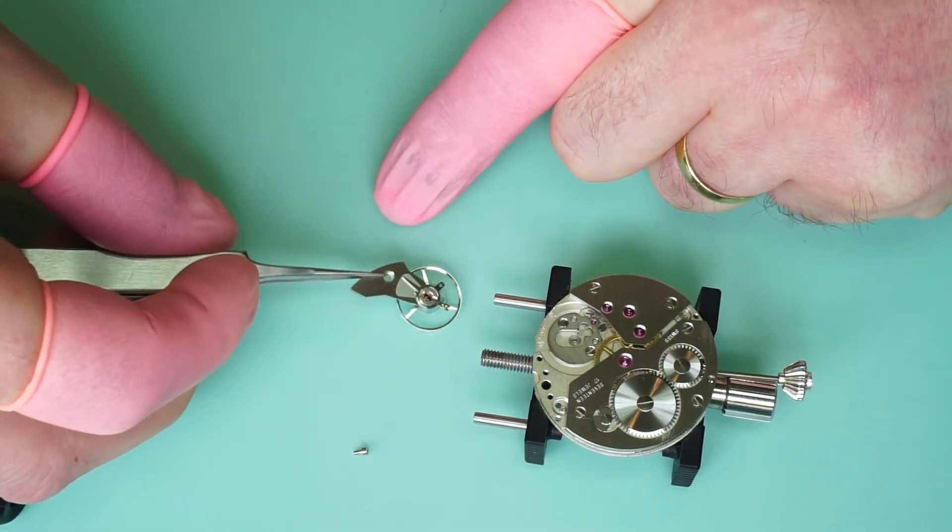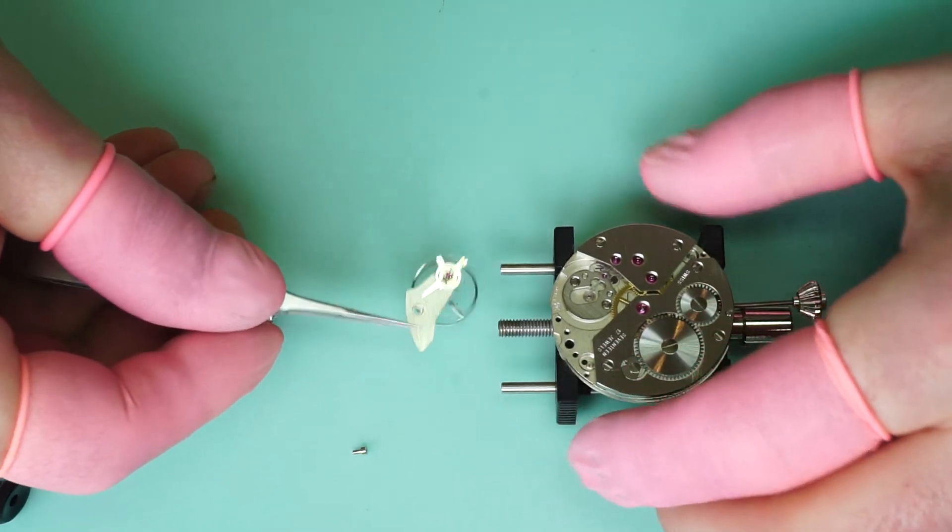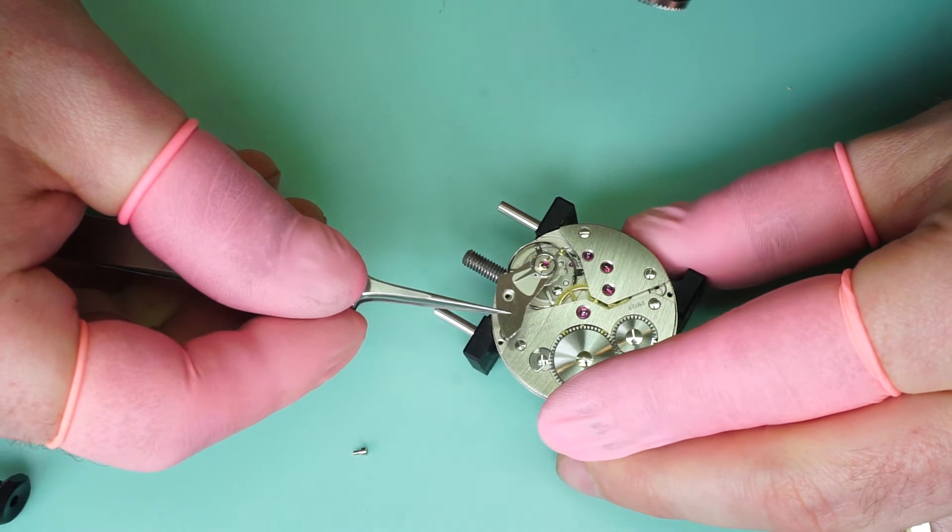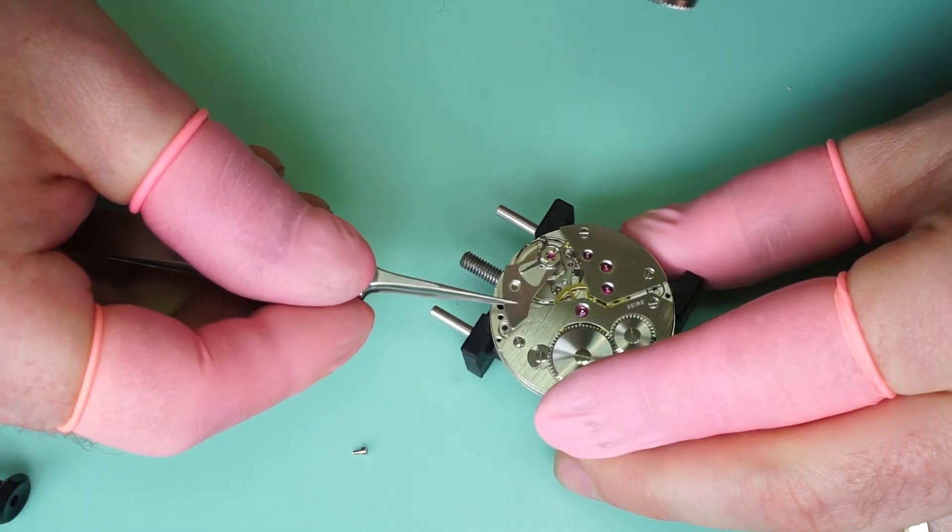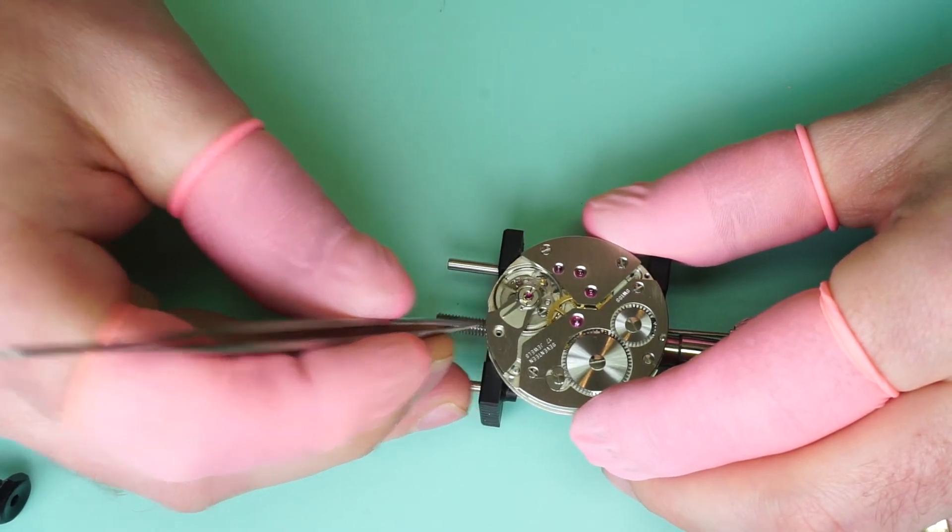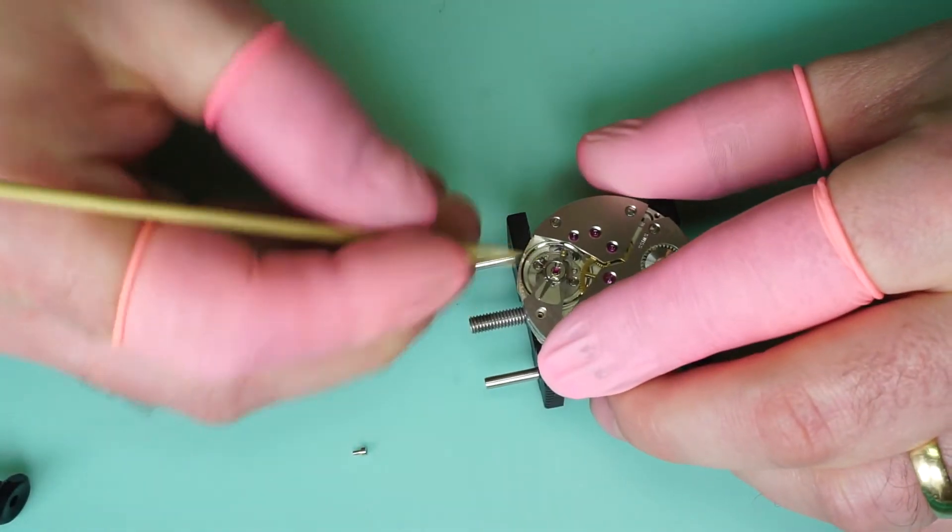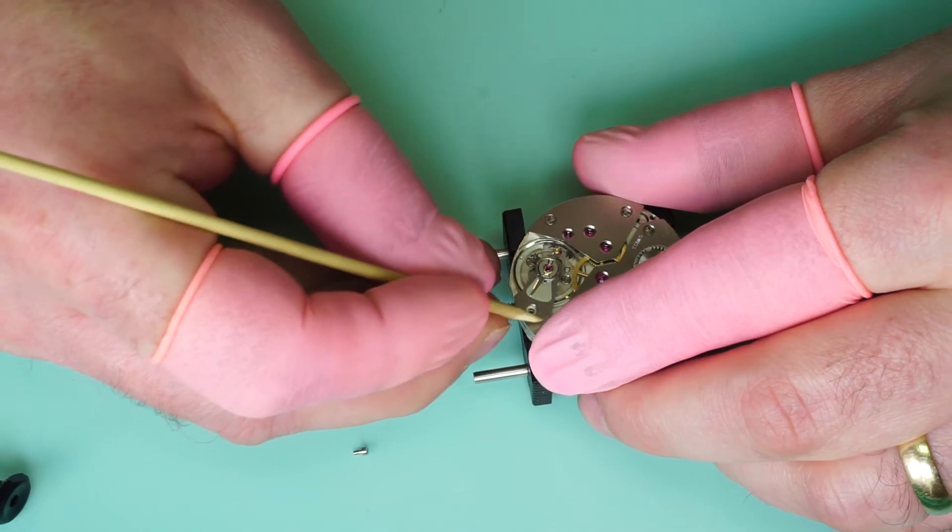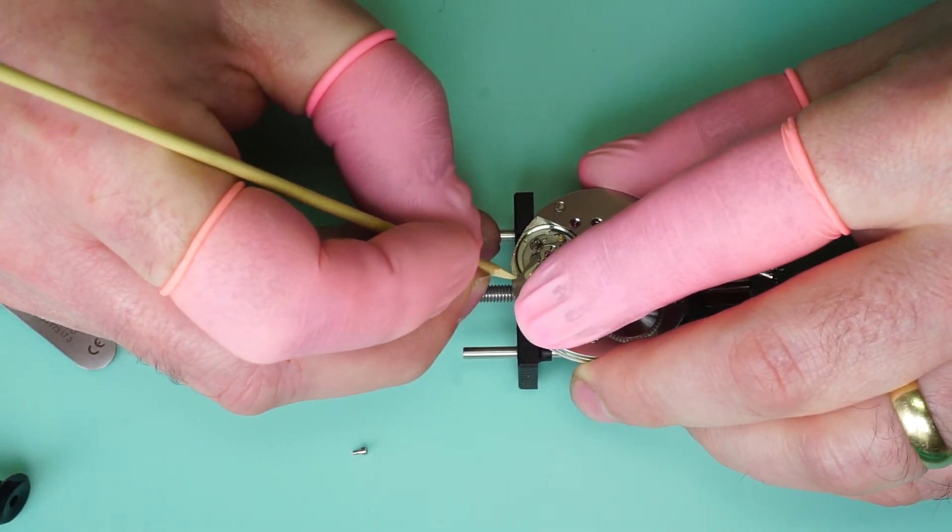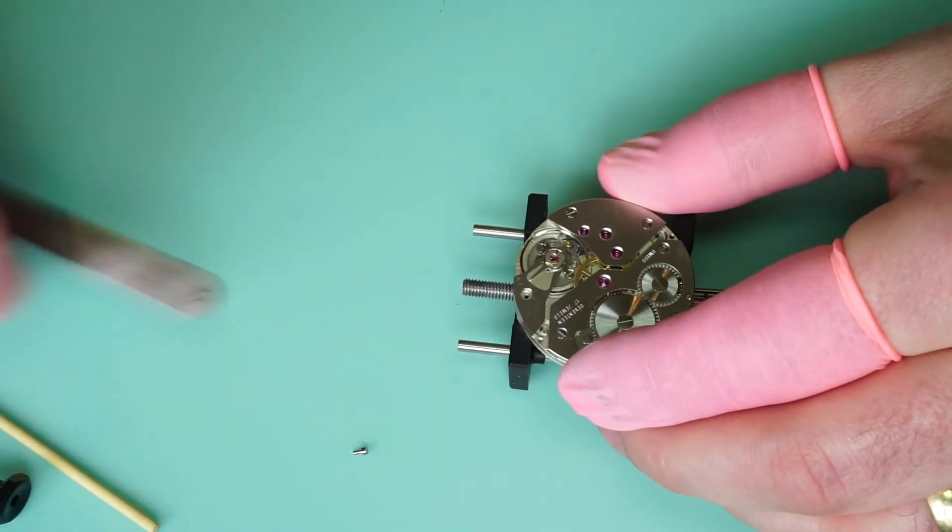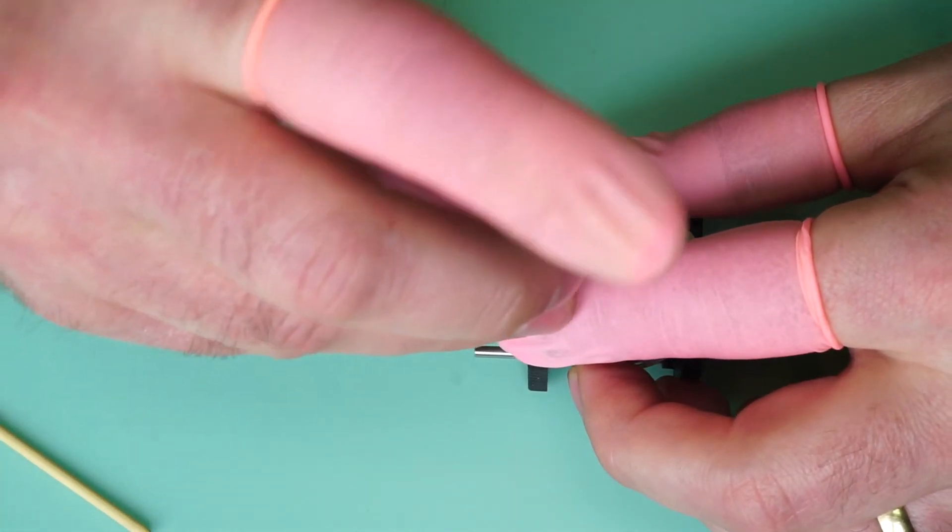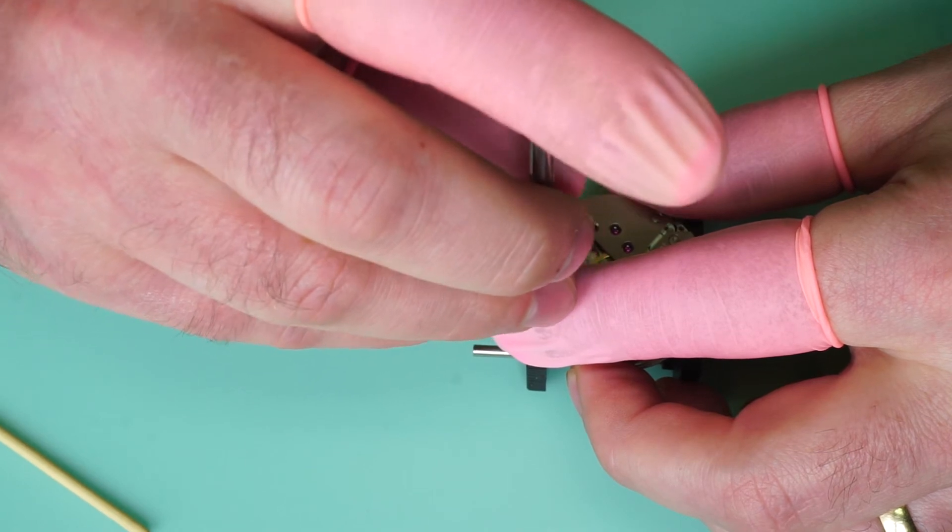Use the loupe. And again this is something that you really want to take your time with because you don't want to damage the pivots of the balance. Use a piece of pegwood to get the balance cock down. As you can see the movement is already swinging into action. And we can tighten down the balance.